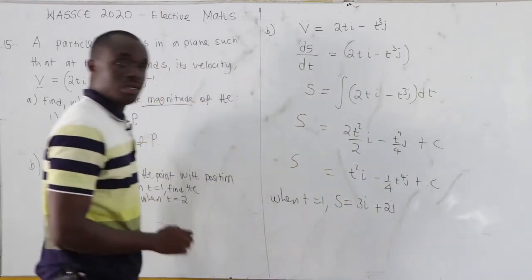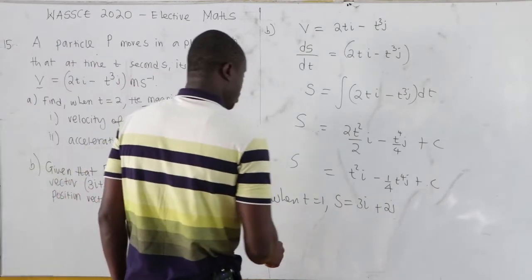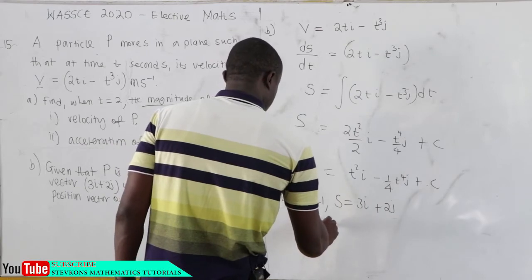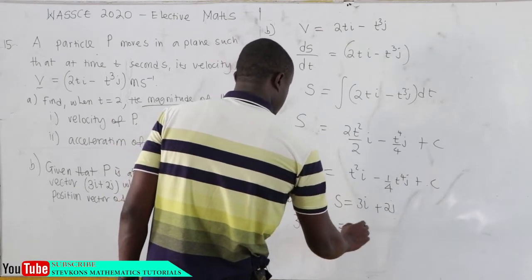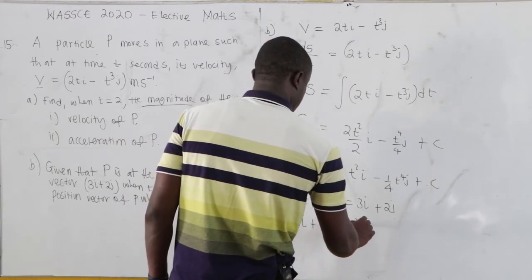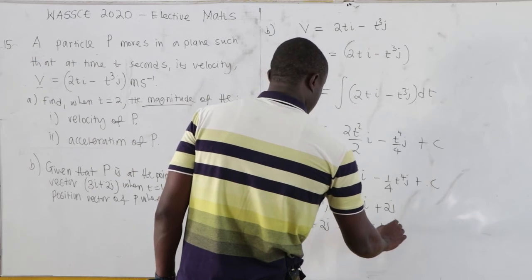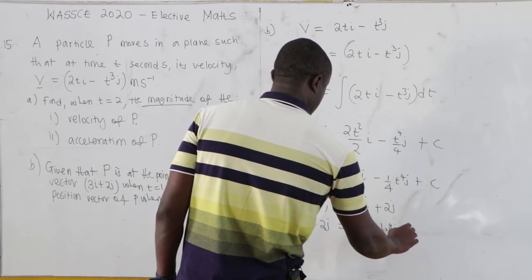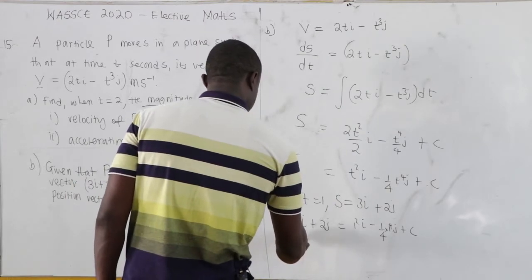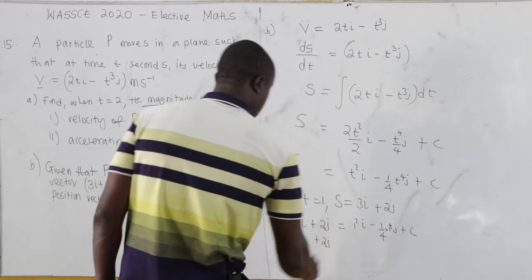When t equals 1, our displacement s was given as 3i plus 2j. Substituting t equals 1: we get 1²i minus (1/4)(1⁴)j plus C equals 3i plus 2j. Rearranging: C equals 3i minus i plus 2j plus (1/4)j.